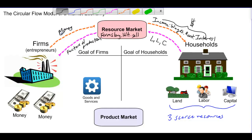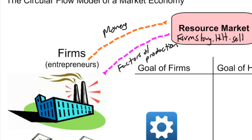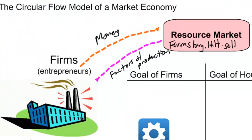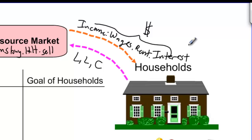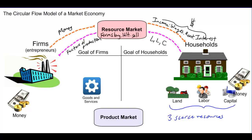These money incomes are the incentive that households have to provide land, labor, and capital to firms in the resource market. Money is important because it allows households to acquire the goods and services they demand in the product market. So far, we have half of our circular flow: households provide land, labor, and capital to firms in the resource market, and money flows back from firms to households.